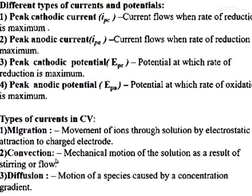Convection current means stirring — an external force allows the analyte to move, and hence there is additional current. Diffusion current arises due to the concentration gradient of the analyte: the analyte moves from a higher concentration region to a lower concentration region, and hence a current is generated, which is called diffusion current.